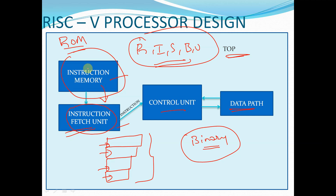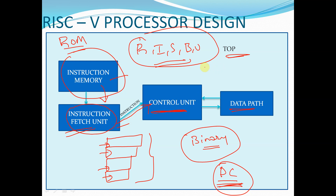Using the instruction fetch unit, we are going to fetch the instructions one by one with the help of the program counter, which will act as a pointer. With the help of this PC, we are going to fetch the instructions out of the instruction memory. After fetching the instruction, we are going to give it to the control unit. What the control unit does is it will segregate the instruction — it will check the function 7 value, function 3 value, and opcode value.